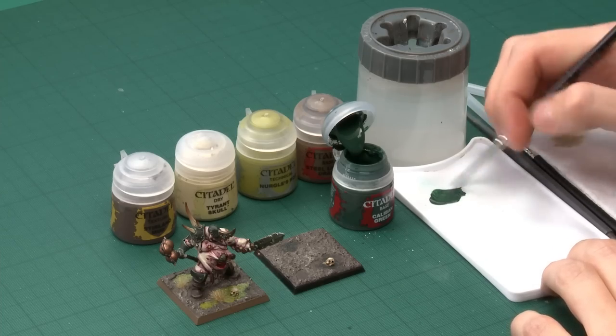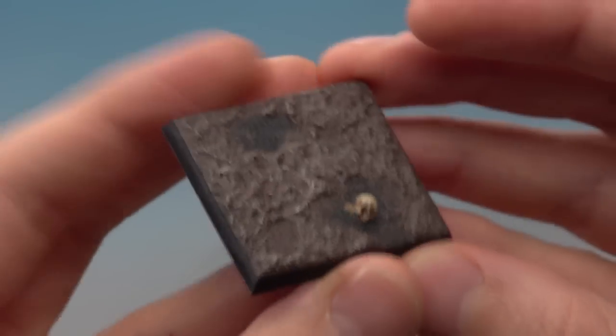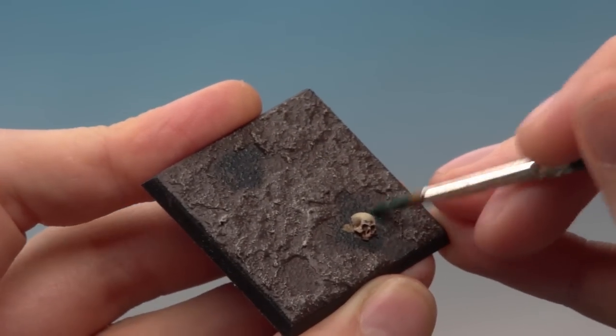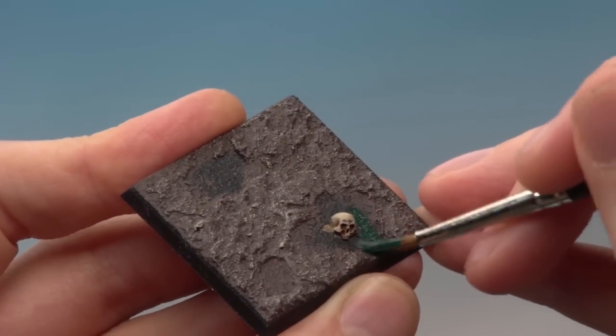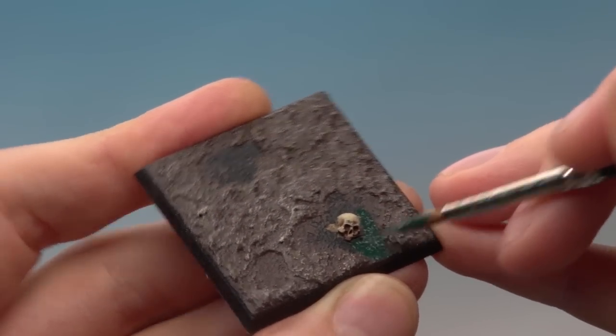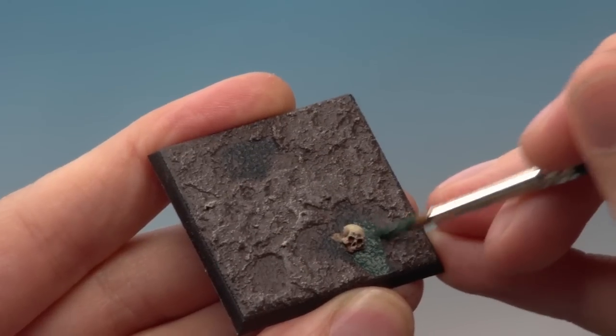Mix that in there and load the brush up. What I'm looking to do is paint this completely over all these flatter areas where we want to have the puddles. You just need to start base coating this color on, just being careful of anything you've got in amongst the puddles like the skull here.